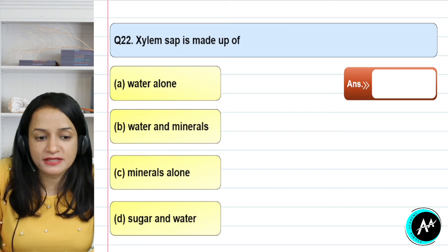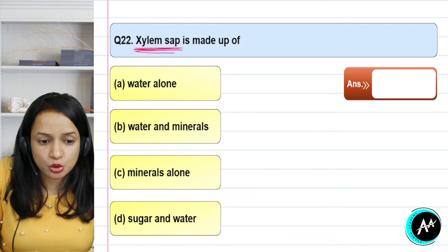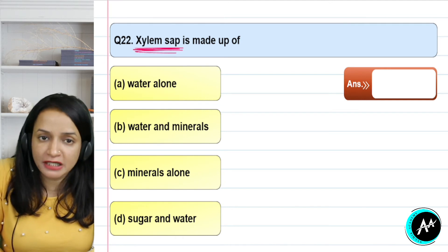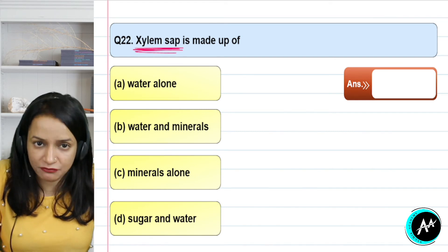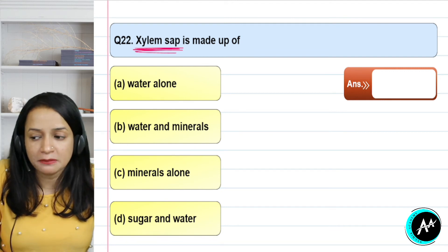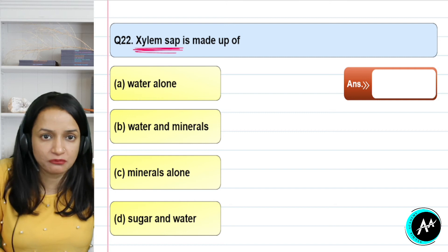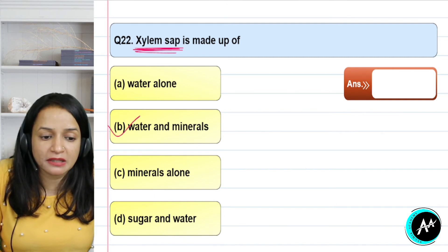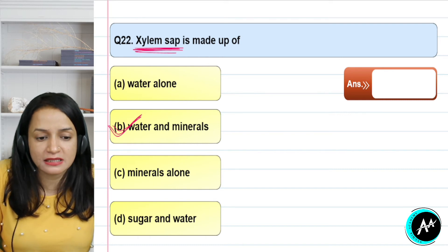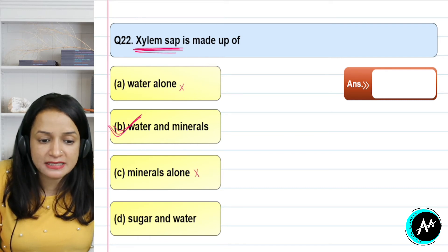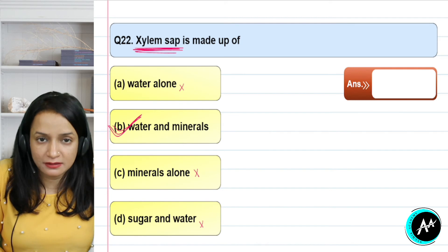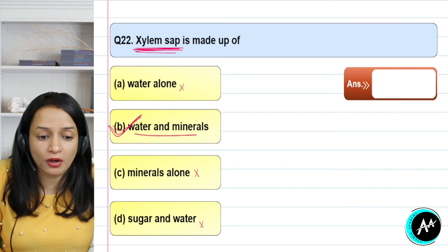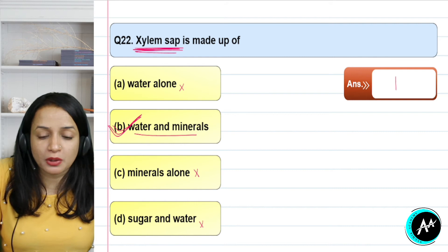Question 22: xylem sap is made up of what? Things transported in xylem combine to form xylem sap. Through xylem, water is transported from root to the whole plant, plus minerals present in the soil. So xylem sap is made of water plus minerals — not water alone, not minerals alone, and sugar is found in phloem, not xylem. The correct answer for question 22 is option B — water and minerals.